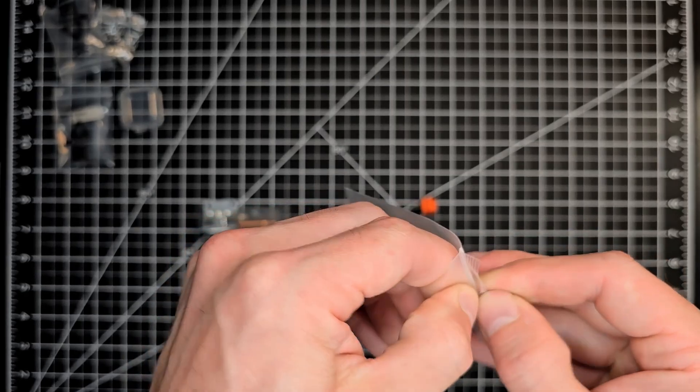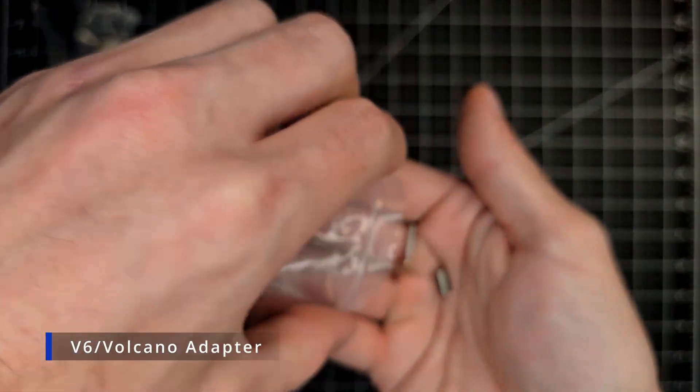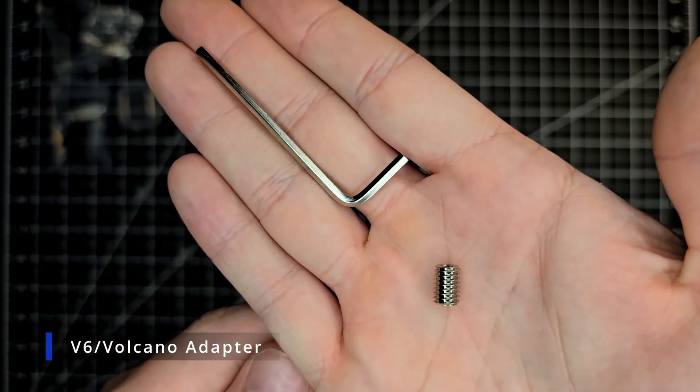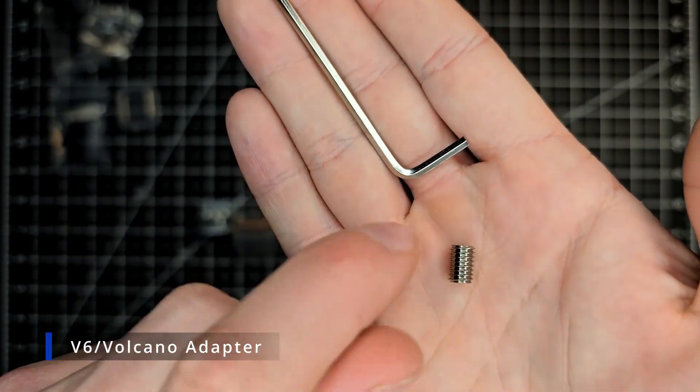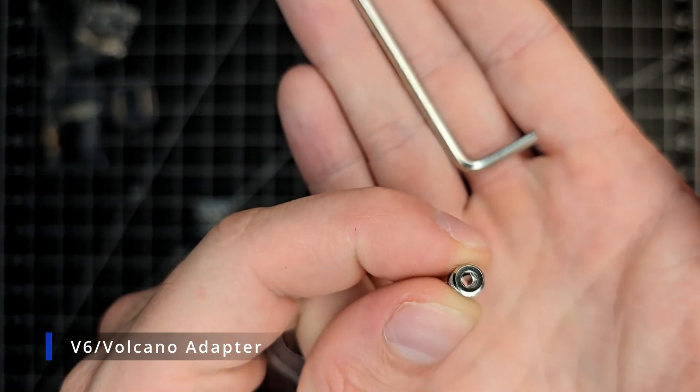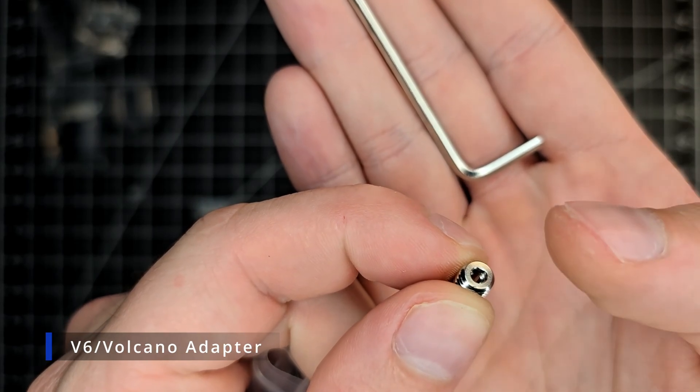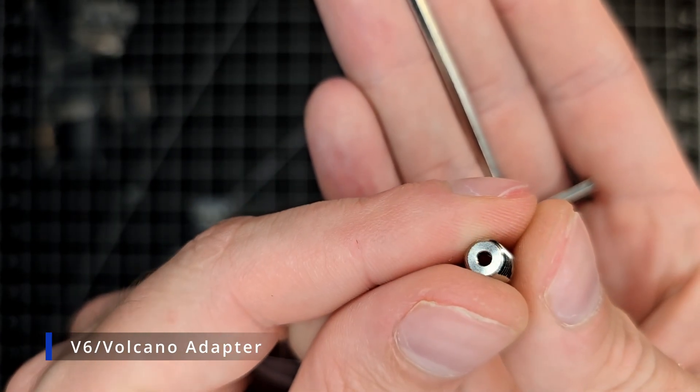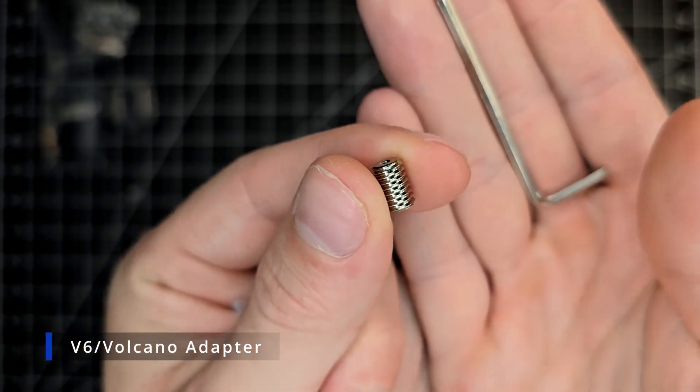In this bag we do have our V6 Adapter which threads in below the Heat Brake and above the MZE in the Heater Block. You will notice that one side does have an Allen port so that you can snug that up into place with the included Allen.